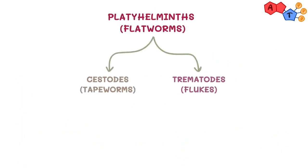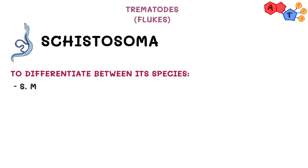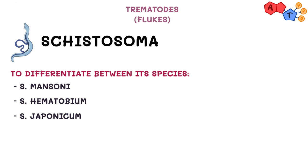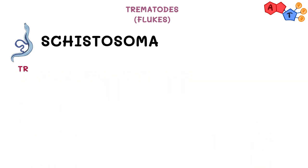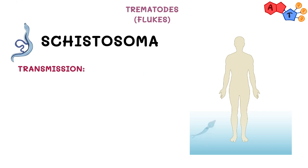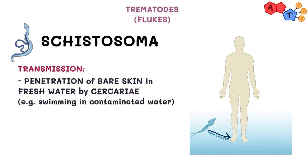Next, we're going to talk about trematodes, or flukes. We'll be talking about Schistosoma and Clonorchis sinensis. Starting with Schistosoma, it's important to differentiate between three species: Schistosoma mansoni, Schistosoma haematobium, and Schistosoma japonicum. We use their eggs to differentiate between them. Schistosoma mansoni egg has a lateral spine, whereas Schistosoma haematobium has a terminal spine, and japonicum does not have a spine. For transmission, it is transmitted when the cercaria penetrates bare skin in fresh water, for example when swimming in contaminated water. The intermediate hosts for Schistosoma are snails.